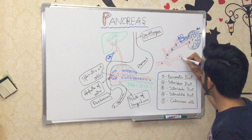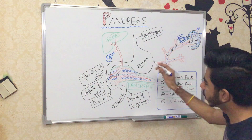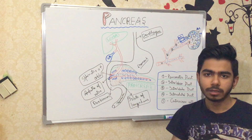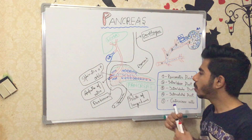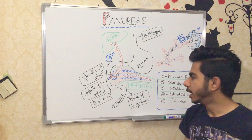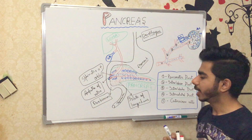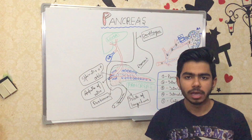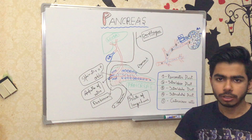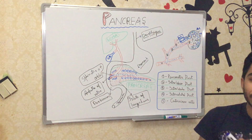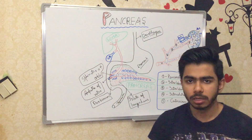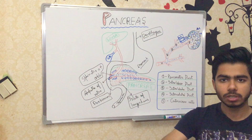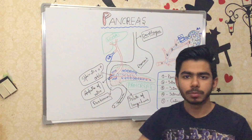The pancreatic duct meets the ampulla of Vater in the duodenum, and the sphincter of Oddi controls regulation of these enzymes and bicarbonate ions. The bicarbonate ions are very important in converting the acidic medium into an alkaline medium. The acidic content spills into the duodenum from the stomach, and bicarbonate ions help the duodenum become alkaline. An alkaline medium is needed to initiate the digestion process, so inactive enzymes and bicarbonate ions together go into the duodenum and initiate digestion.